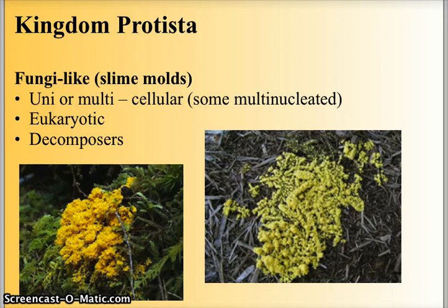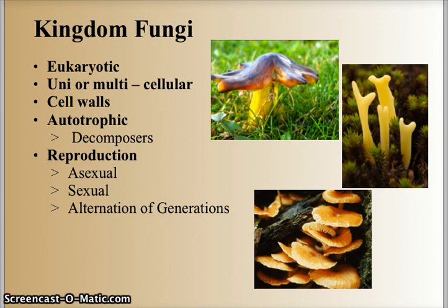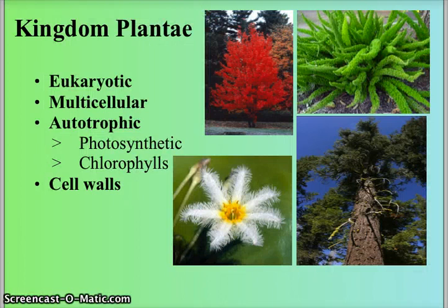The protist kingdom also includes slime molds and fungi-like organisms. They can be unicellular or multicellular, are eukaryotic, and typically are detritivores or decomposers. Kingdom Fungi are eukaryotic and can be unicellular or multicellular. They always have cell walls and are typically decomposers. Their reproduction includes asexual, sexual, and often a cycle called alternation of generations.